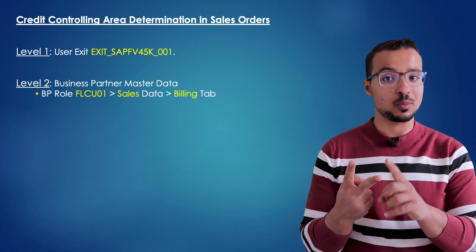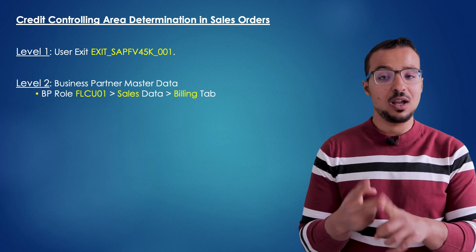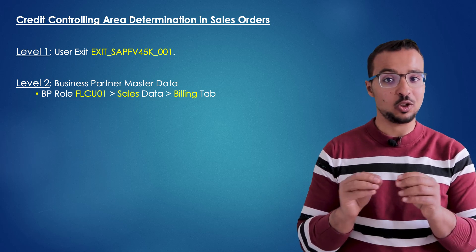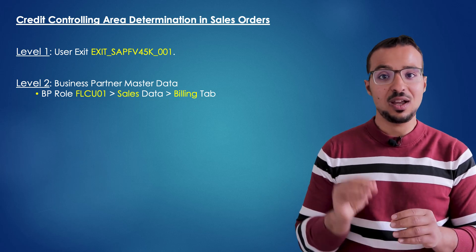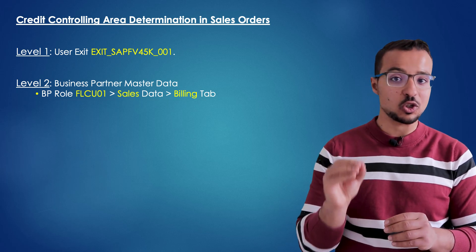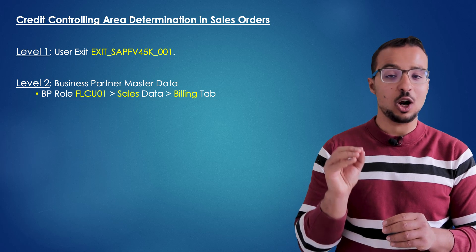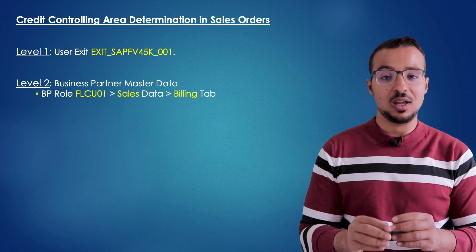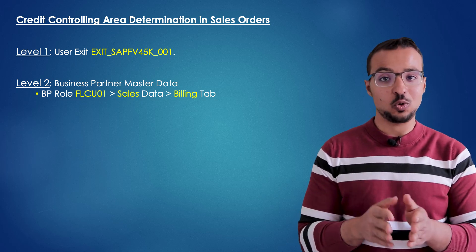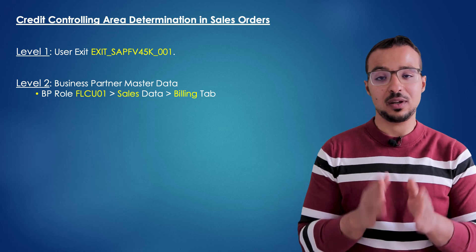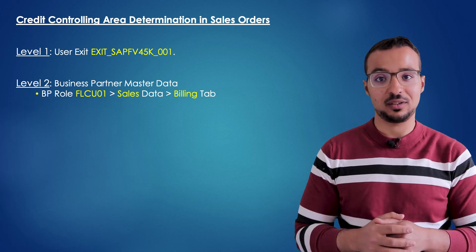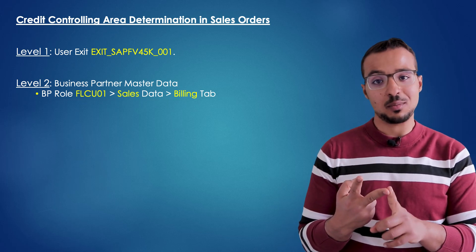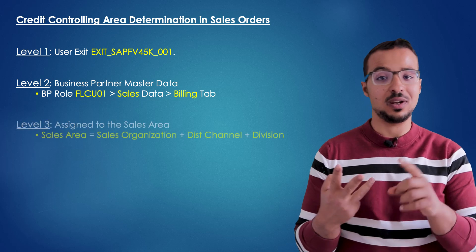The second level is: is there a credit controlling area maintained in the business partner master data? In the business partner master data, we can maintain a credit controlling area in the sales customer role, under the sales and distribution details, under the billing tab. If we maintain a credit controlling area there, then SAP will find it. But if there is no credit controlling area maintained in the business partner, SAP will move to the third level.